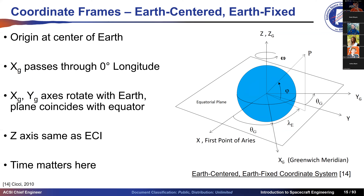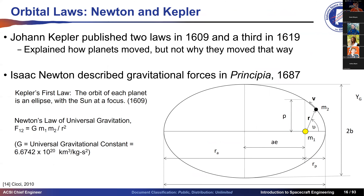Importantly, while the Earth spins, the ECI coordinate frame does not — that's the inertial part. Earth-centered Earth-fixed, ECEF, is essentially ECI but rotates with the Earth. Because it rotates with the Earth, you need to know what time it is. Timekeeping in space often uses sidereal time, which is more about Earth's rotation than the time we perceive on Earth.